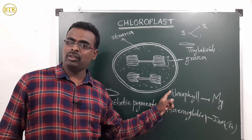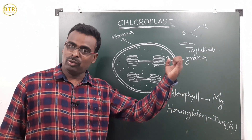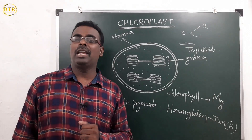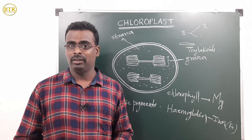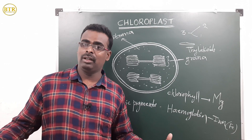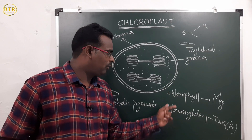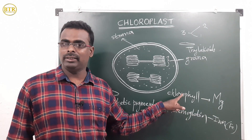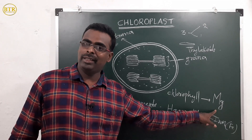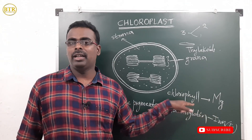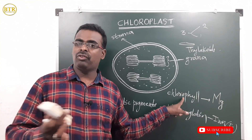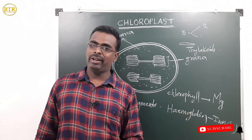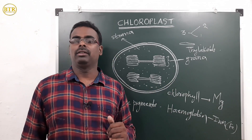The function of chlorophyll is to trap solar energy to carry out the photosynthesis process. The function of hemoglobin is to transport oxygen in our body. Differences: chlorophyll is green colored and contains magnesium; hemoglobin is red colored and contains iron. Chlorophyll absorbs sunlight for photosynthesis; hemoglobin transports oxygen.